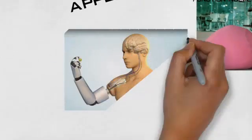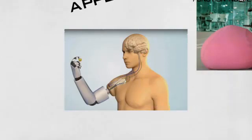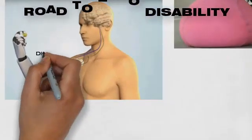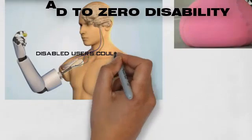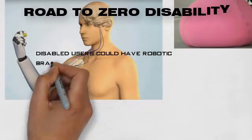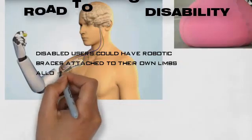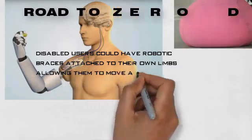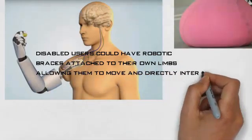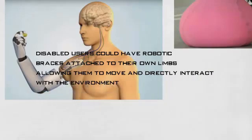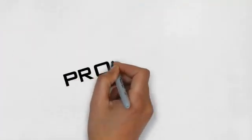Instead of a robotic hand, disabled users could have robotic braces attached to their own limbs, allowing them to move and directly interact with the environment. Signals could be sent to appropriate motor control nerves in the hands, bypassing a damaged section of the spinal cord and allowing the actual movement of the subject's own hand.